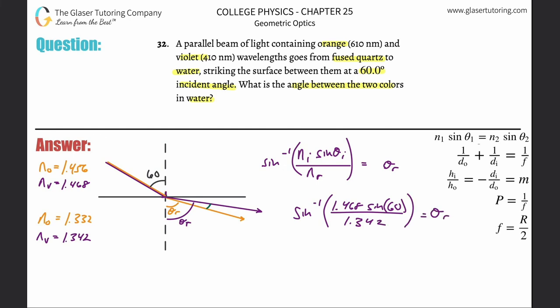That equals my refracted ray's angle. Let's calculate it - make sure you're in degree mode. Inverse sine of 1.468 times sine of 60 divided by 1.342. I get a value of about 71.32 degrees. Notice how it bent away - the angle here is greater.